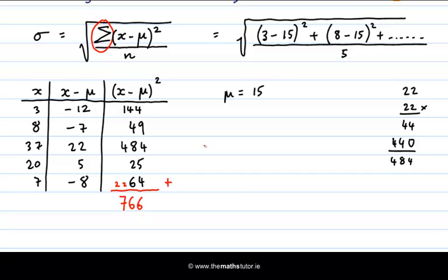And we then divide that by 5. So all together, our σ standard deviation is equal to the square root of 766 over 5, which is equal to the square root of 153.2.